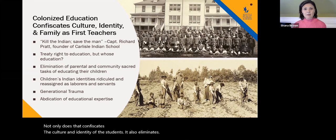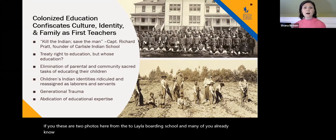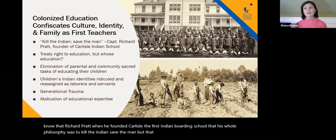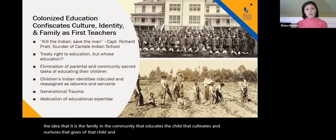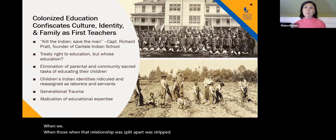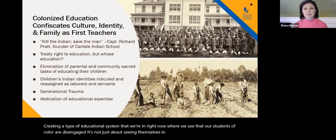These images are from the Tulalip boarding school. Many of you know that Richard Pratt, when he founded Carlisle — the first Indian boarding school — his whole philosophy was to kill the Indian and save the man. But that also meant killing the family and killing the idea that it is the family and the community that educates the child, cultivates and nurtures the gifts of that child. When that relationship was stripped apart, we ended up creating a type of educational system where we see students of color disengaged.